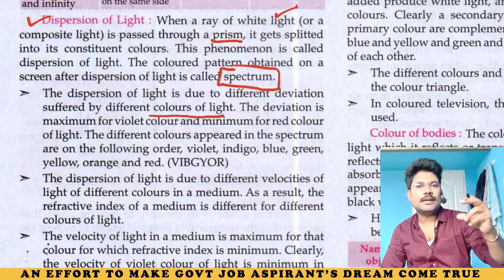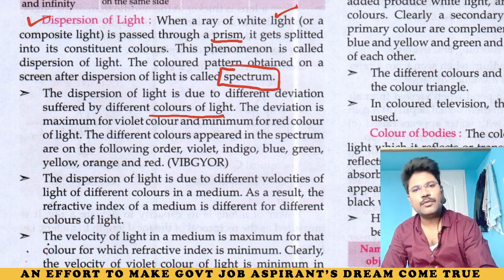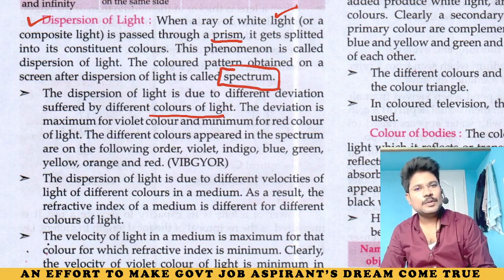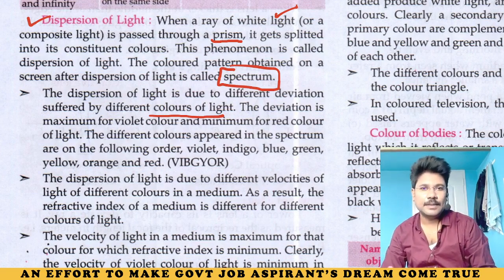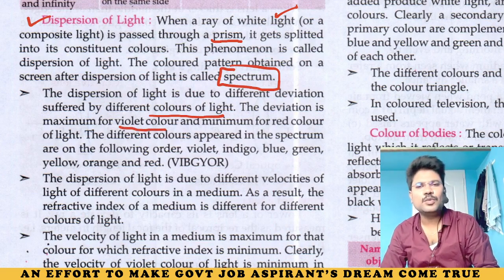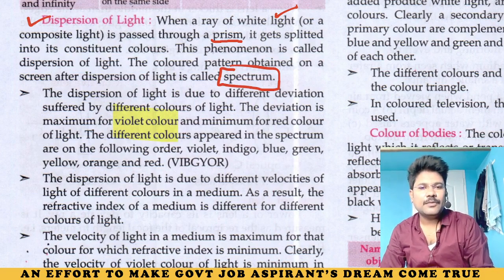If there is white light, there are different lights. You can see VIBGYOR. Now we can see how the colors are split into the constituent colors. That is important in competitive exams. The theory is important. The deviation is maximum for violet color, and minimum for red color. The different colors appear in the spectrum in the following order: VIBGYOR.